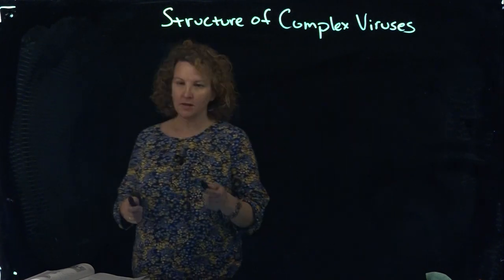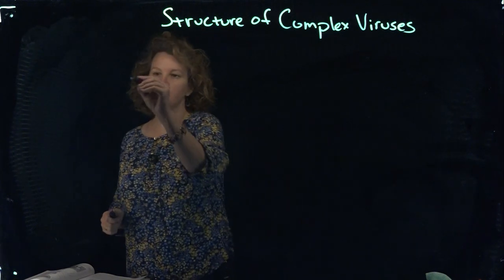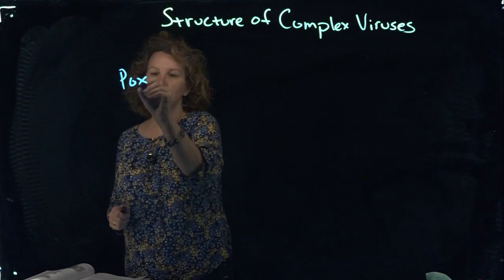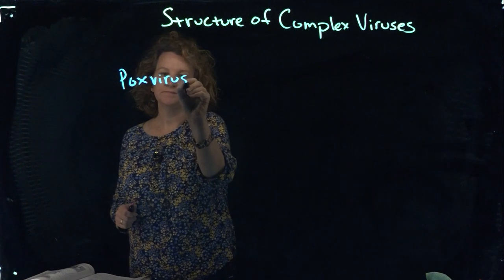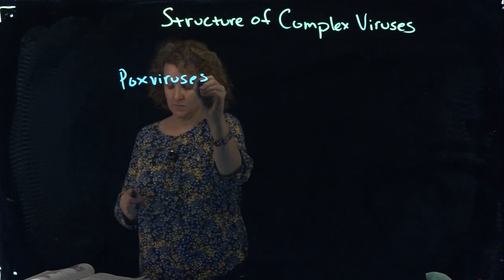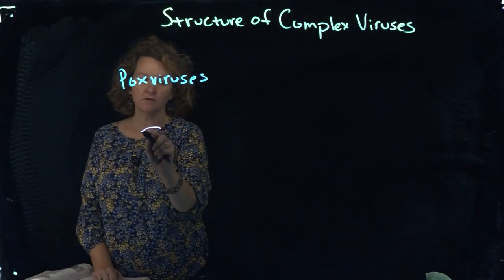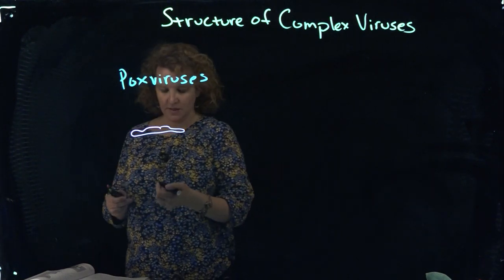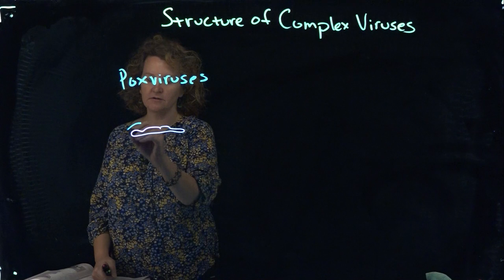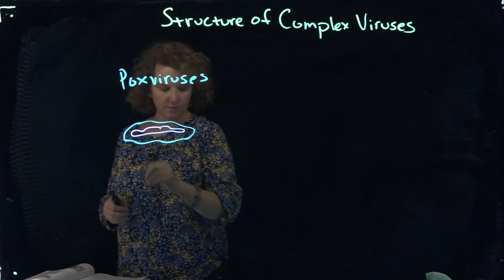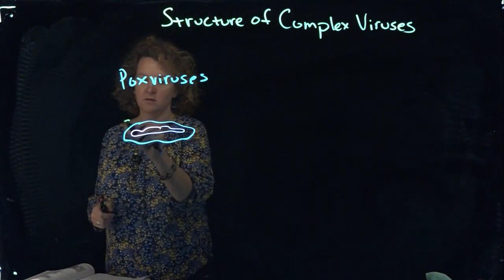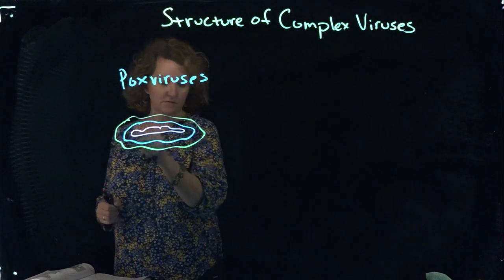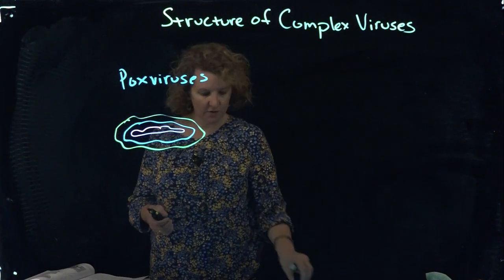So one group of these viruses are the pox viruses, and smallpox would be in that group. They still have the nucleic acid in the middle, but then they're covered just by several layers of either proteins or lipoproteins and various different types of structures coating around the cell.